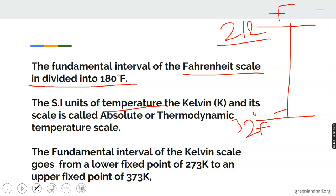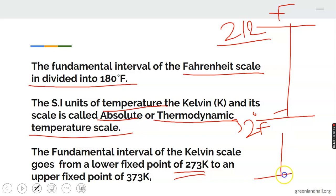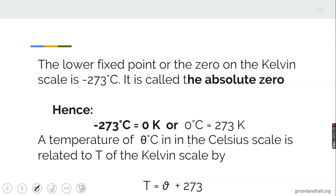The third unit of temperature is the Kelvin, denoted by capital K, and its scale is called the absolute or thermodynamic temperature scale. The fundamental interval of the Kelvin scale goes from the lower fixed point of 273 K up to 373 K — an interval of 100 Kelvin, just like the Celsius scale. The lower fixed point, or zero on the Kelvin scale, is minus 273 degrees Celsius, and it is called absolute zero.